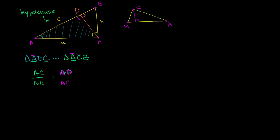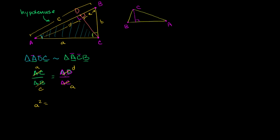We know AC is lowercase a, AB is lowercase c, and let's call AD lowercase d, and DB lowercase e. So the proportion becomes a over c equals d over a. Cross-multiplying gives a squared equals c times d, or a² = cd. That's an interesting result, so let's see what we can do with the other triangle.